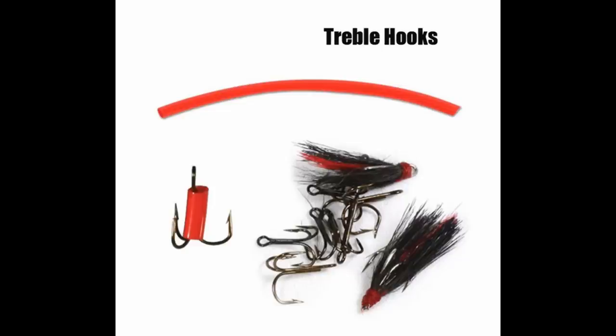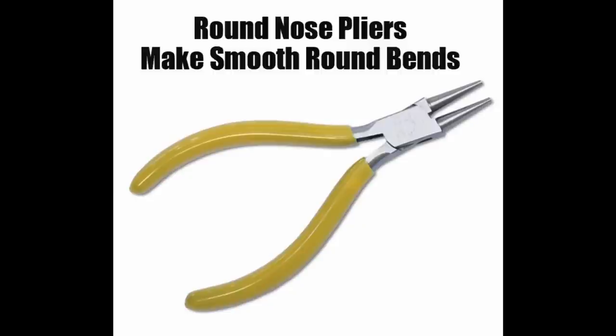Treble hooks are used on most inline spinners, but single hooks can be used if preferred. You will need a pair of pliers to bend your wire. We recommend round bend, although needle nose will work.